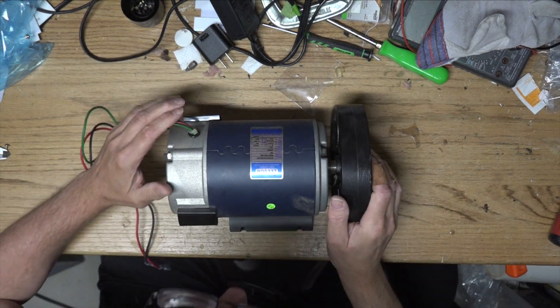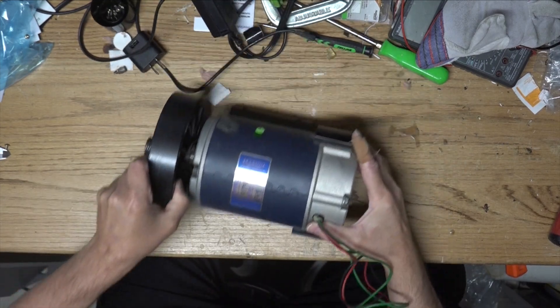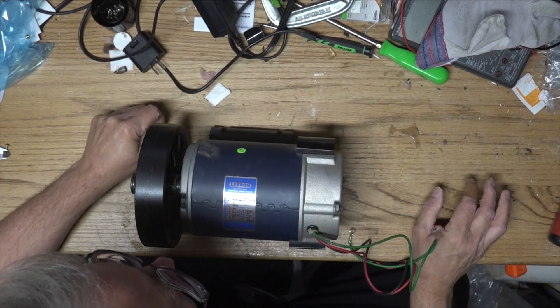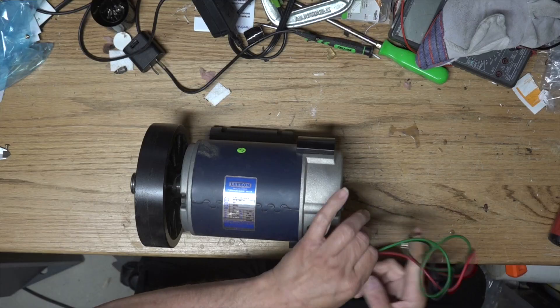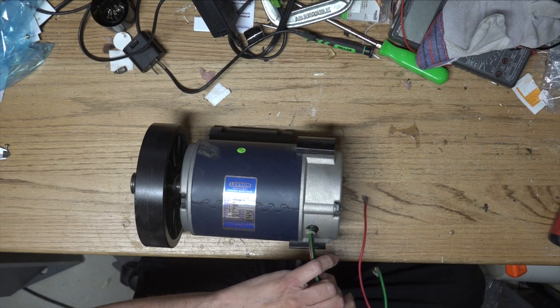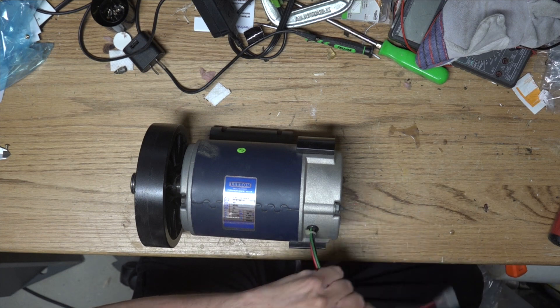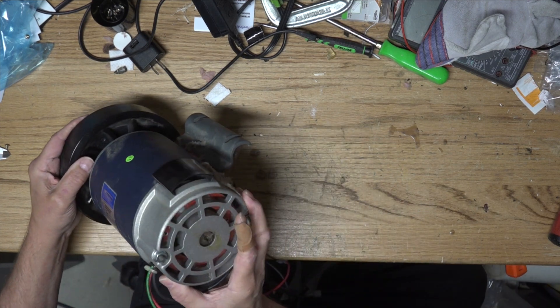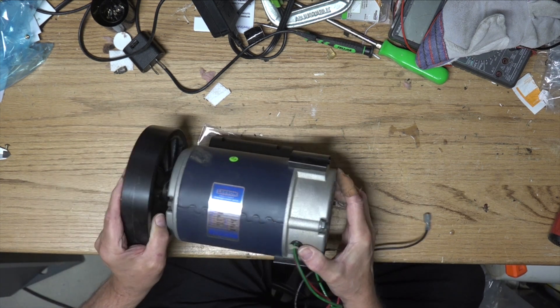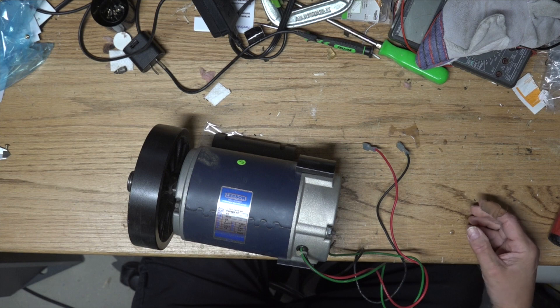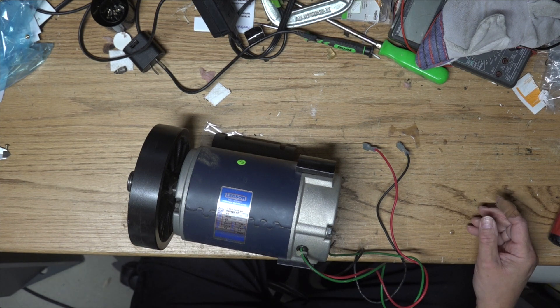But the thing we all came here for was that guy - the motor. And this is a Leeson. I don't know if that's a good one or not. It's 4,000 RPMs, 90 volts, 20 amps, 2 horsepower supposedly. Continuous duty, that's nice to see. Now this one has a positive and negative and a ground. So the green one's the ground, of course. There is no temperature sensor in the back of this unit.